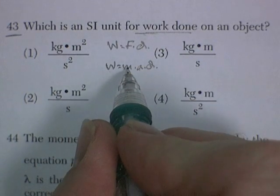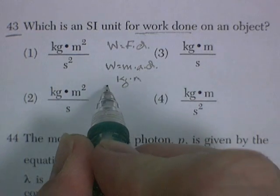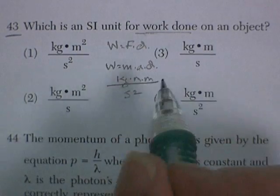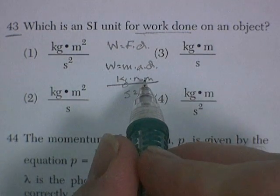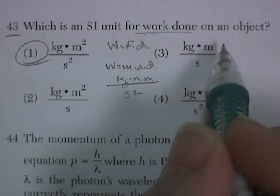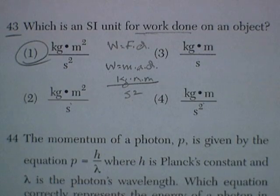All right, so mass is kilograms. Acceleration is meters per second squared. And distance is meters. So I'm looking for kilogram meters squared per second squared. That's the first one I got.